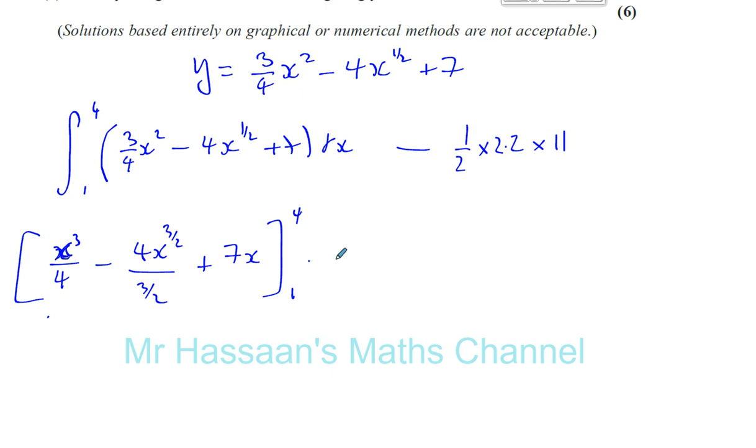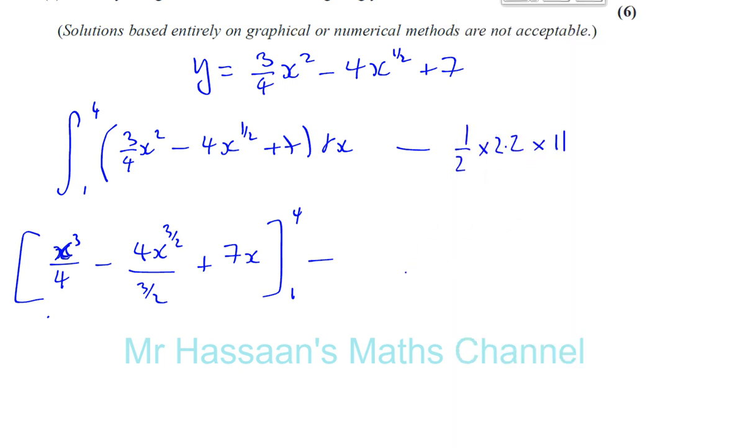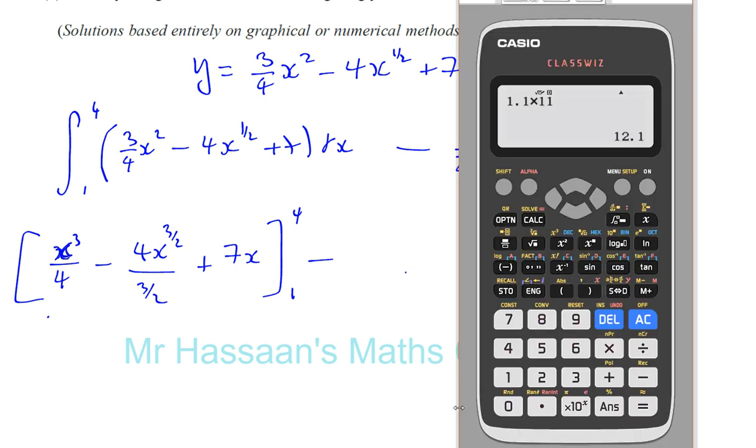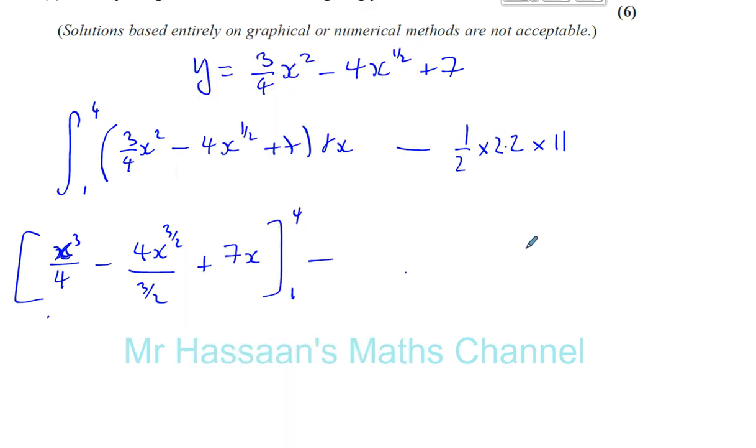because we're integrating a definite interval. 1, 4 minus, you're going to have, that's going to be 1.1 times 11, isn't it? So 1.1 multiplied by 11 gives you 12.1. Let's make sure. 1 half, 0.5 times, what was it? 2.2 times 11. That's right. That gives you 12.1. So minus 12.1. And we've got to take that away.